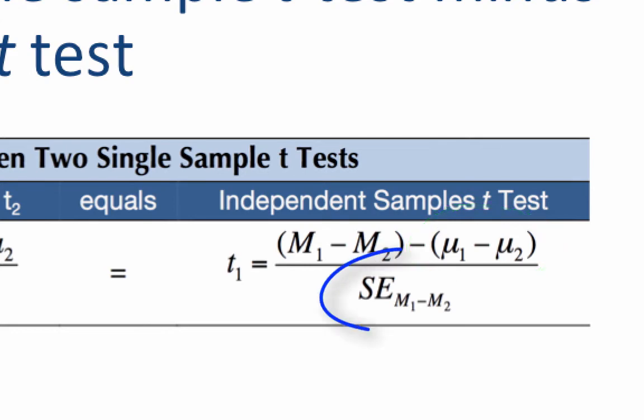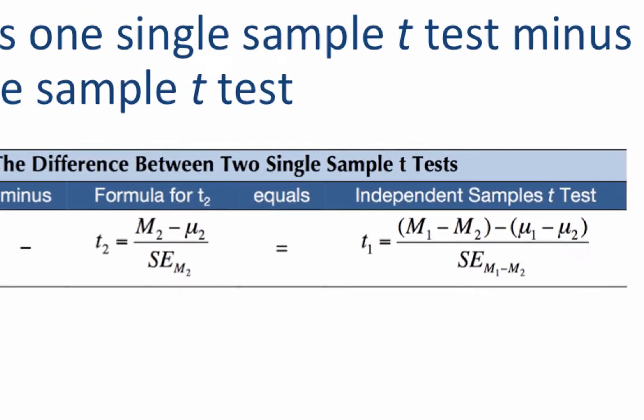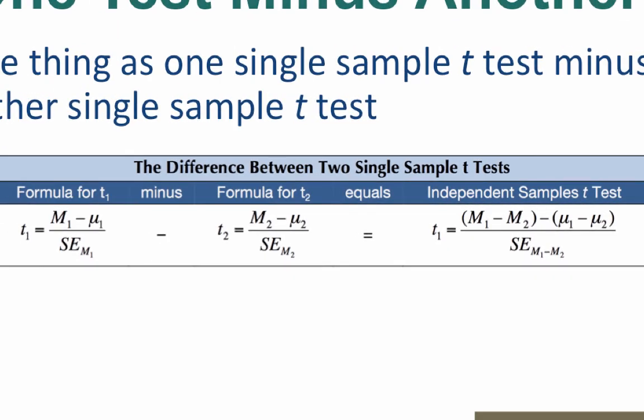Now we already know how to find sample means. We can calculate them. The sum of x divided by n. The same is true for the sample standard deviations. We could calculate those as well. But this numerator reads quantity of mean 1 minus mean 2 minus mu 1 minus mu 2.